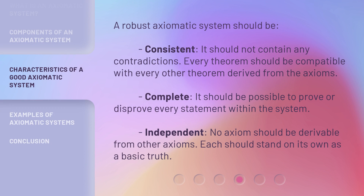A robust axiomatic system should be consistent — it should not contain any contradictions, and every theorem should be compatible with every other theorem derived from the axioms. It should be complete, meaning it should be possible to prove or disprove every statement within the system. And it should be independent, meaning no axiom should be derivable from other axioms — each should stand on its own as a basic truth.